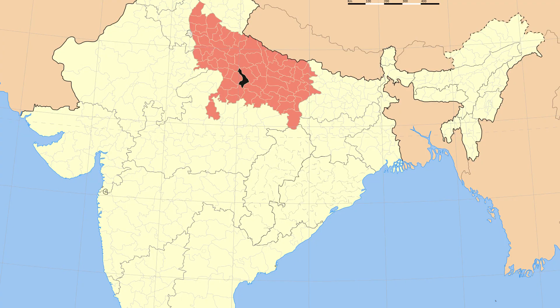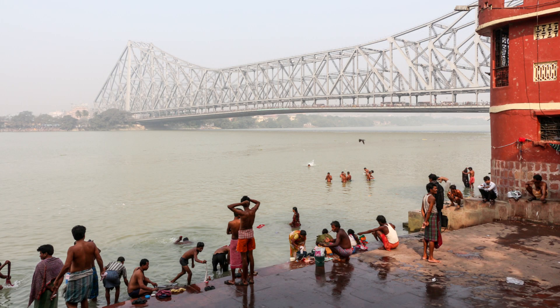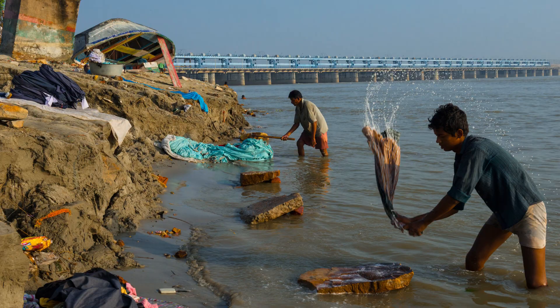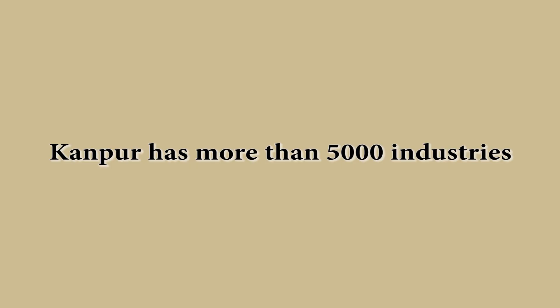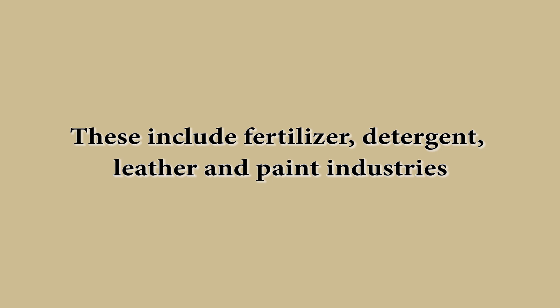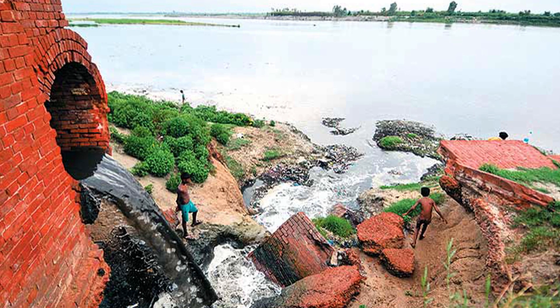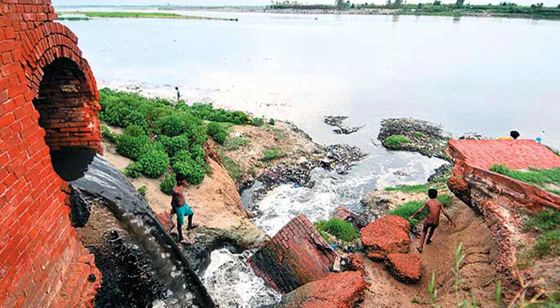The Ganga at Kanpur in Uttar Pradesh has one of the most polluted stretches of the river. Kanpur is one of the most populated towns in Uttar Pradesh. People can be seen bathing, washing clothes and defecating in the river. They also throw garbage, flowers, idols of gods and goddesses and non-biodegradable polythene bags into the river. Kanpur has more than 5000 industries, including fertilizer, detergent, leather and paint industries, which discharge toxic chemical wastes into the river.